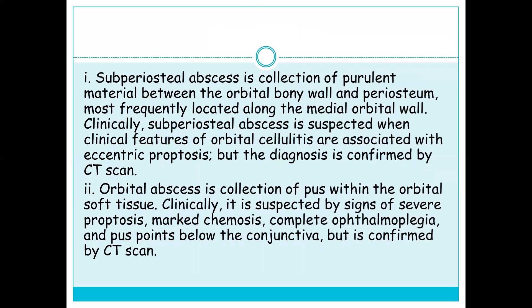A subperiosteal abscess is a collection of purulent material between the orbital bone wall and periosteum; it is most frequently located along the medial orbital wall. Clinically, subperiosteal abscess is suspected when features of orbital cellulitis are associated with eccentric proptosis, but the diagnosis is confirmed by CT scan.